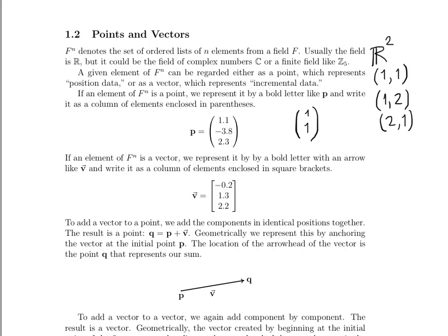What about vectors? Well, if an element of F^n is a vector, then we represent it by a bold letter with an arrow above it, like this, and we write it as a column of elements enclosed in square brackets. Now obviously when you're writing out problem sets by hand, it's very difficult to bold things just by themselves. So if you're talking about a point, you really want to make it clear that it has these curved parentheses around it. And if you're talking about a vector, you add that arrow, and then you add the square brackets.